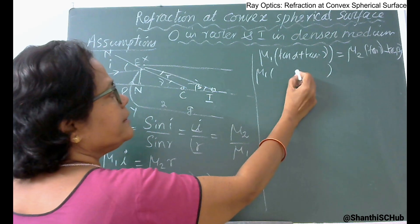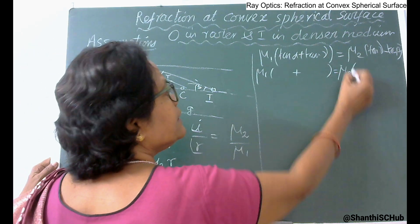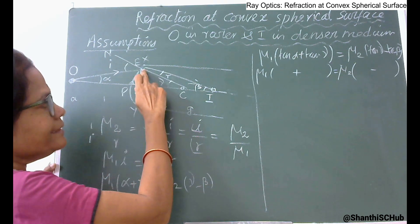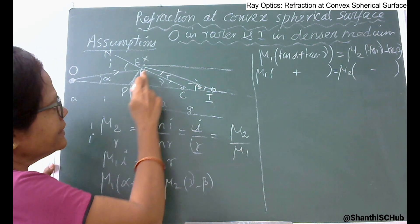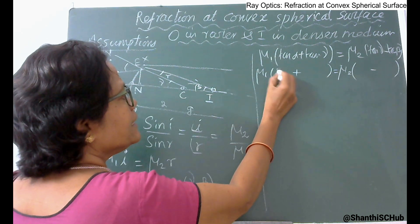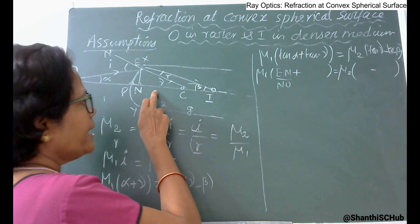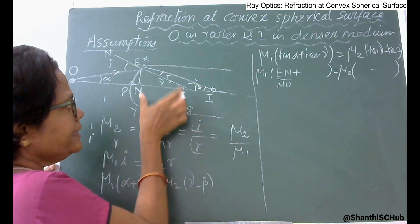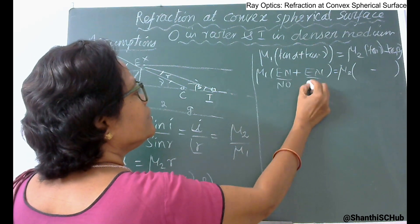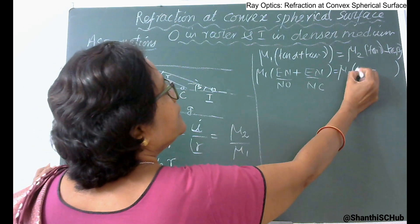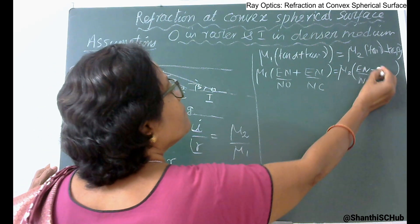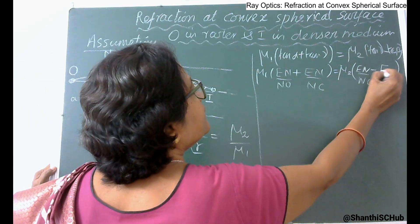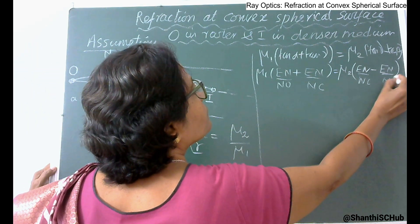Now substituting the values: from right-angle triangle ENO, tan alpha = EN / NO; from triangle ENC, tan gamma = EN / NC; and from triangle ENI, tan beta = EN / NI. Substituting these into the equation gives all terms with EN in the numerator.